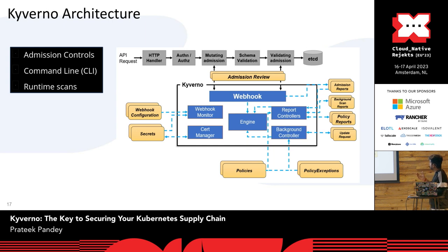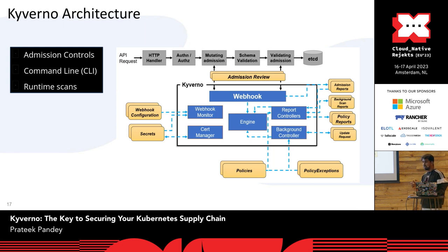Kyverno has two resource types: one is called Policy, which is specifically for namespace-scoped resources, and then there is ClusterPolicy, which is a cluster-scoped resource.